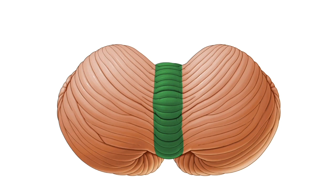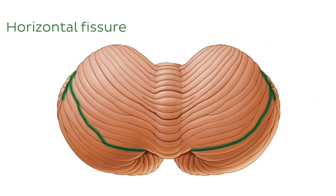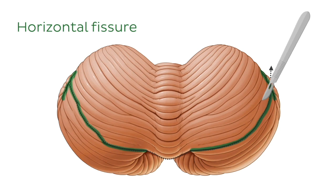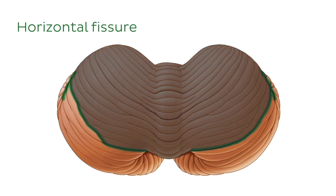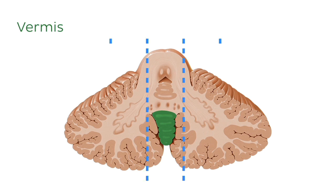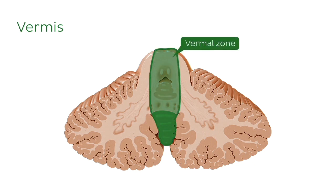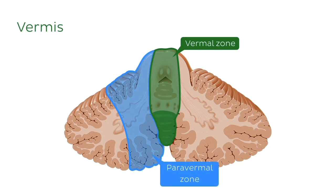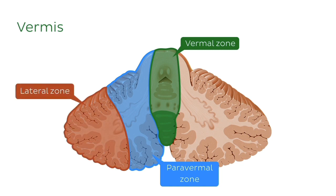Have a look at this image. Highlighted on the cerebellum is the horizontal fissure, and if we cut the cerebellum along the horizontal fissure and then lay it face up, we end up with a structure that looks like this. We can still see the vermis highlighted in green, and this structure allows us to break the cerebellum into several zones that help us localize particular cerebellar nuclei. First we have the vermal zone highlighted in green, beside this both on the left and right side we have the paravermal zones highlighted in blue, and lastly on the outermost edges we have the lateral zones highlighted in red.